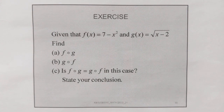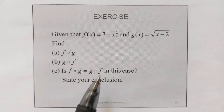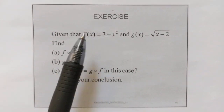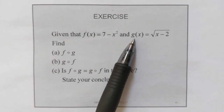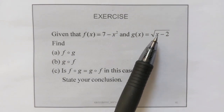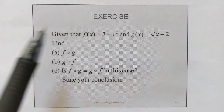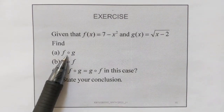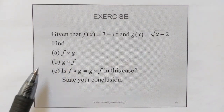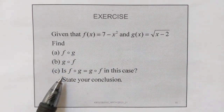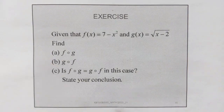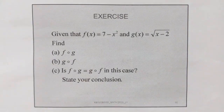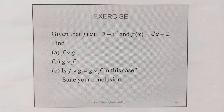So this is the exercise for today's video. You have function f(x) equals 7 minus x squared and g(x) equals the square root of x minus 2. You need to find f of g and g of f. Lastly, you need to compare your answers in a and b and state your conclusion. Please write the answers and submit to your tutorial lecturer.